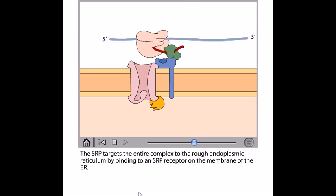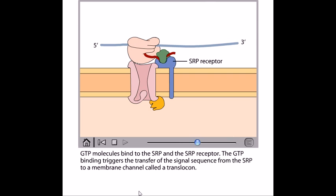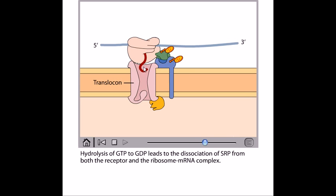Now the SRP targets the entire complex to the rough endoplasmic reticulum by binding to an SRP receptor on the membrane of the ER which is denoted with blue. Now GTP molecules bind with the SRP and the SRP receptor and the GTP binding triggers the transfer of the signal sequence from the SRP to a membrane channel called the translocon.